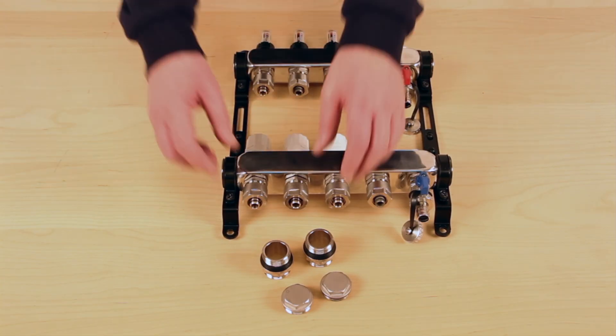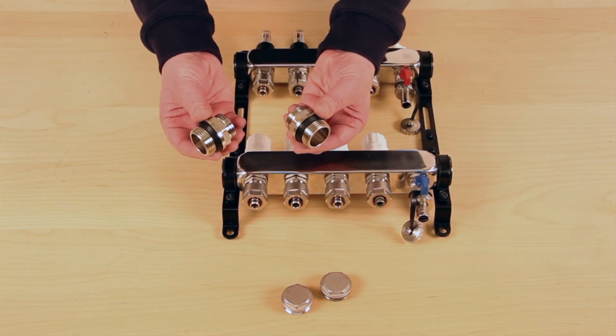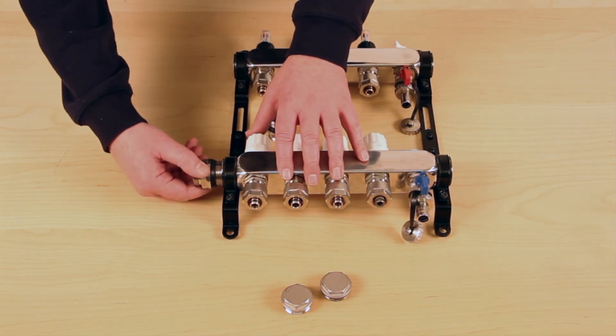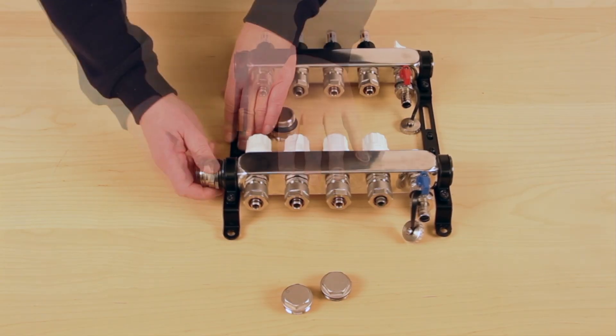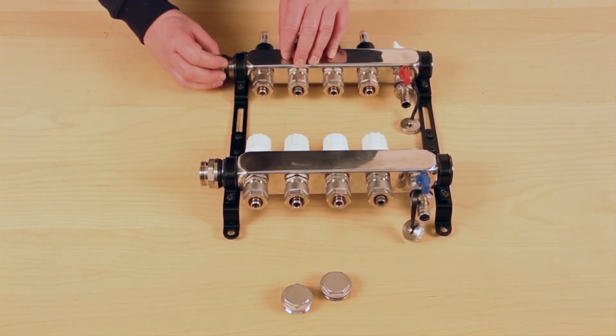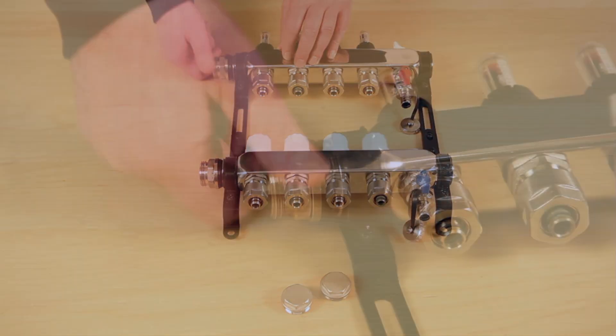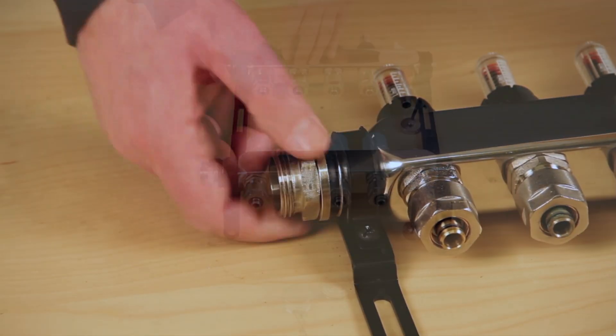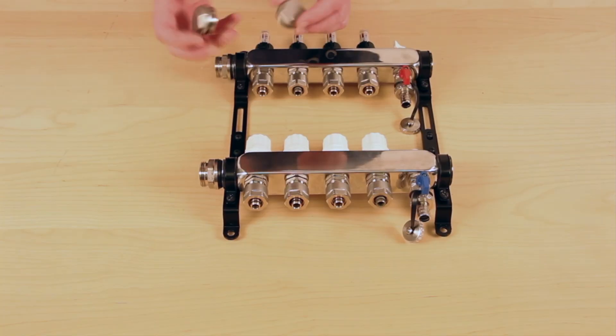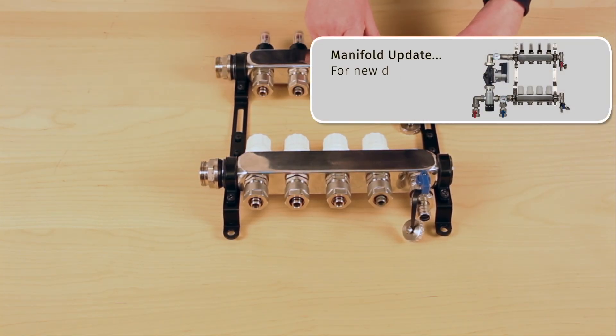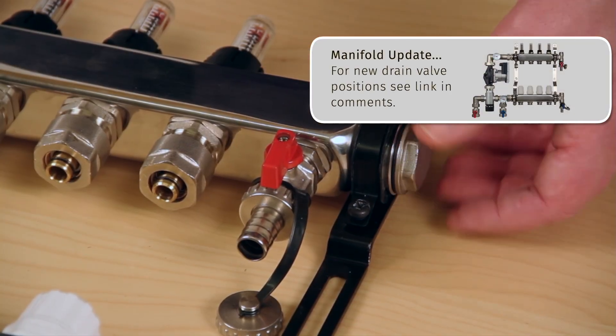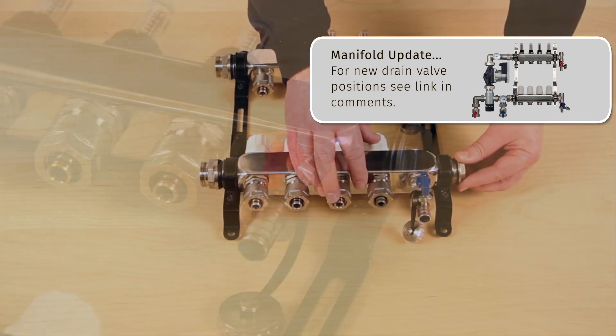Before the pump set can be attached, manifold adapters must be fitted to the return and flow bars. Bar end blanks must also be fitted - one for the flow bar and one for the return bar. Tighten both sets with a suitable spanner.